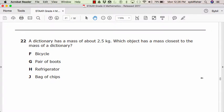Number twenty-two. A dictionary has a mass of about 2.5 kilograms. Which object has a mass closest to the mass of a dictionary? F, a bicycle. G, a pair of boots. H, a refrigerator. Or J, a bag of chips.